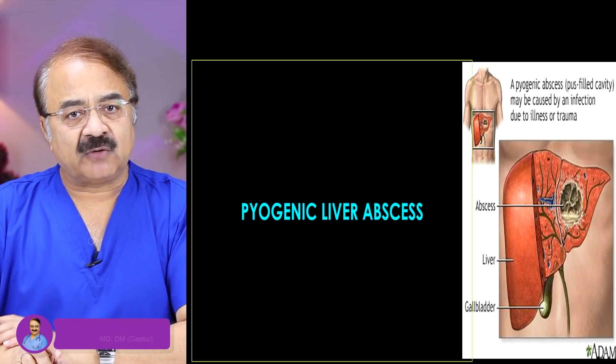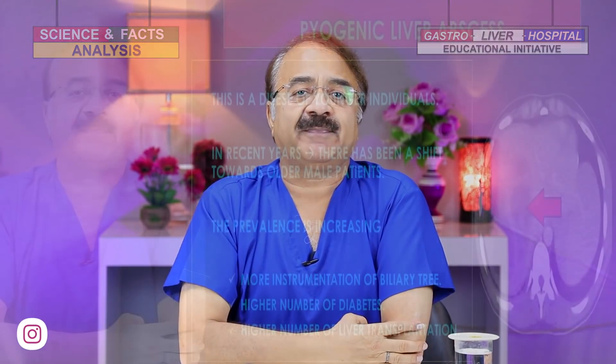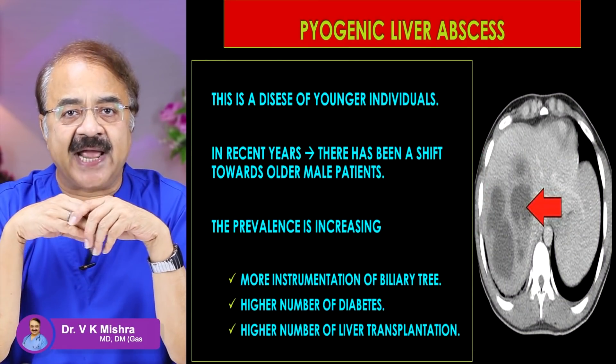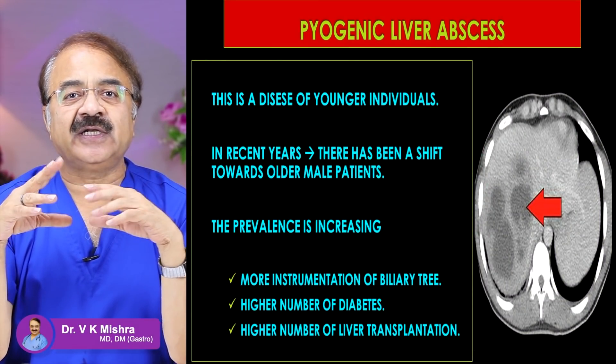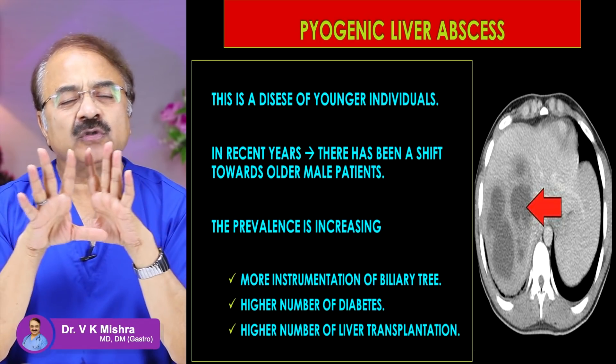Now I will talk about pyogenic liver abscess. This tends to affect a younger or middle-aged population. But over a period of time, even the elderly population is developing multiple pyogenic liver abscesses. The incidence of pyogenic liver abscess is increasing, as you can see in the photograph.